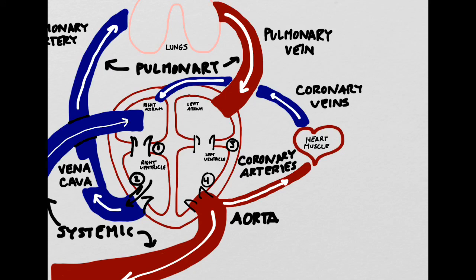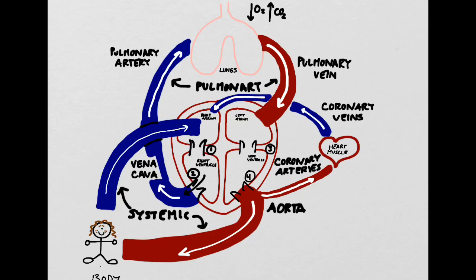Once all the oxygen has been extracted from the blood by the heart muscle tissue, the blood will return to the right atrium through vessels called the coronary veins. The deoxygenated blood will be added back into the circuit in the right atrium and go through the process all over again. We've now seen the three major circulation loops.